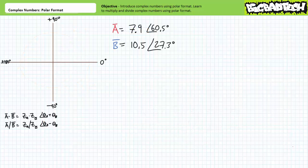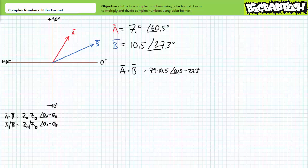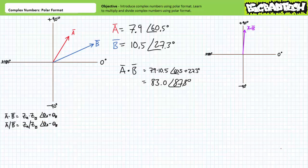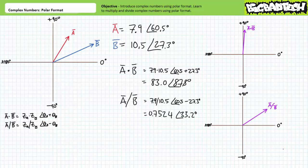Consider complex number A with a magnitude of 7.9 at an angle of positive 60.5 degrees. A is in the first quadrant, as is B. If we're asked to perform the operation A times B, we multiply 7.9 times 10.5 and add the angles to obtain the result 83 at an angle of 87.8 degrees. If we're asked to perform A divided by B, we divide 7.9 by 10.5 and subtract 27.5 degrees from 60.5 degrees to obtain the result 0.7524 at an angle of 33.2 degrees. Note the results of A times B and A divided by B are redrawn using different graphs.